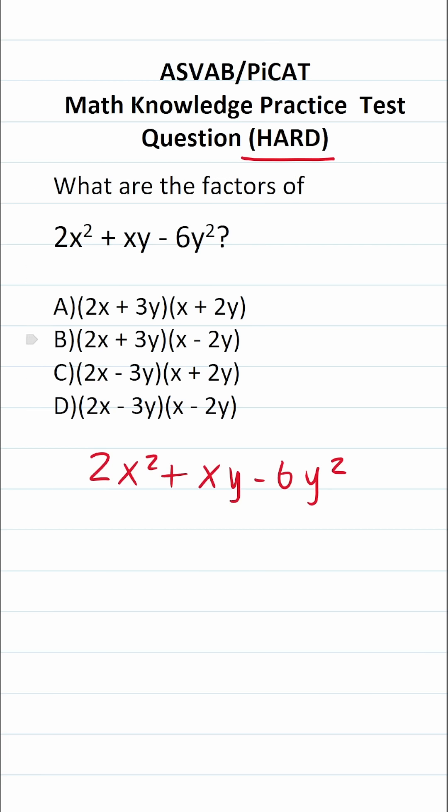In order to factor this expression, we're going to use what's called the AC method. That is to say, this is A, B is right here, and technically there's a 1 right here, and C is right here.